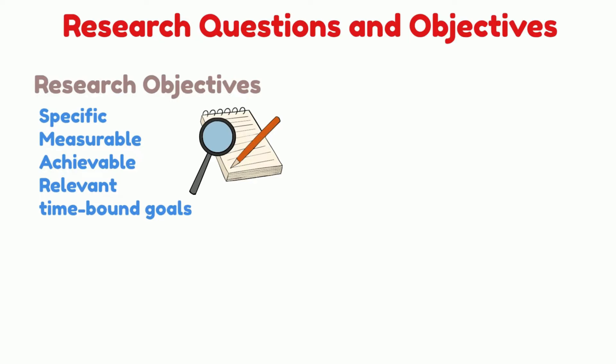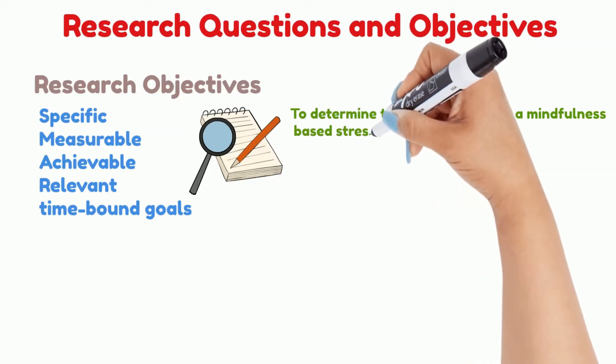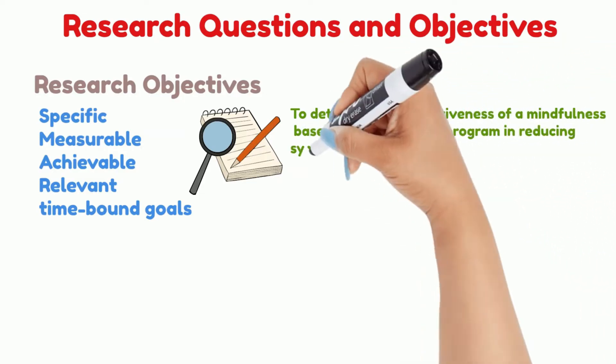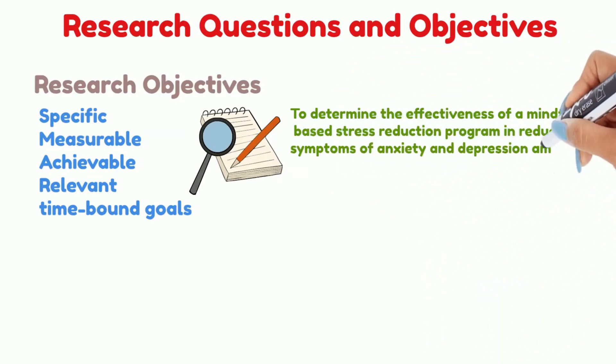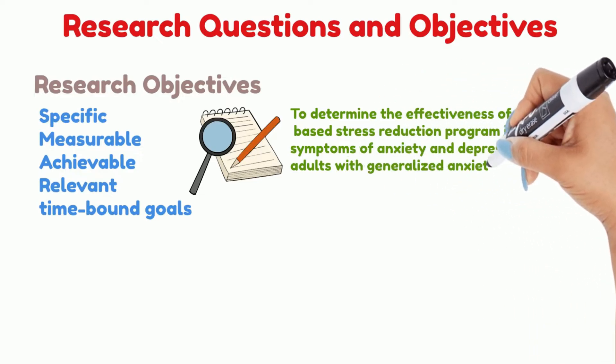This is an example of research objectives: To determine the effectiveness of a mindfulness-based stress reduction program in reducing symptoms of anxiety and depression among adults with generalized anxiety disorder. This research objective is specific, measurable, achievable, relevant, and time-bound.